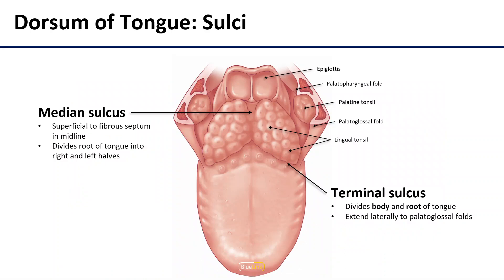We're going to start off talking about the dorsum of the tongue, as there's a lot more going on here in terms of surface anatomy. There are two large sulci that are going to divide the tongue into anterior and posterior, right and left. The terminal sulcus is what divides the anterior body from the posterior root on each side — there is technically one on the left and one on the right. The median sulcus then is going to divide that posterior tongue into right and left halves, sitting directly over a fibrous septum in the midline that extends all the way down into the body of the tongue, separating the right musculature from the left.